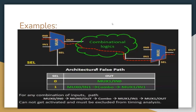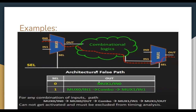Now let's look at the second example. Here there are two MUXes, MUX 0 and MUX 1. When the select input is 0, IN0 is selected and gives the output directly. When the select line is 1, it selects input 1 of MUX 0, whose output passes through some combinational logic and connects to input 1 of MUX 1, then gives the final output. So there is no connection from IN0 to the output in this case — this is the false path for our circuit.